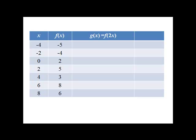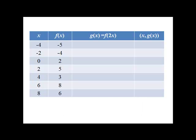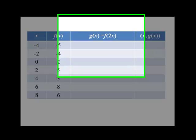The fact that we're multiplying by 2 may have us instinctively think that'll stretch the graph horizontally, because the change is on the input, so we know it's going to be a horizontal movement. We'll also plot the points x, g of x to confirm whatever we're thinking.